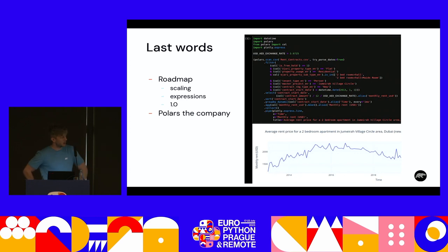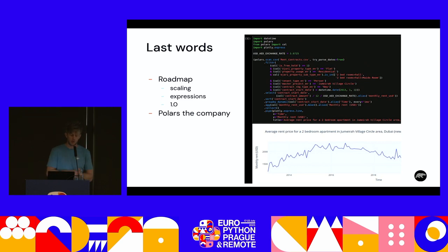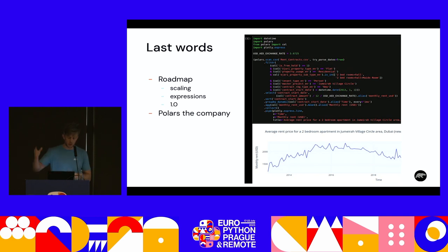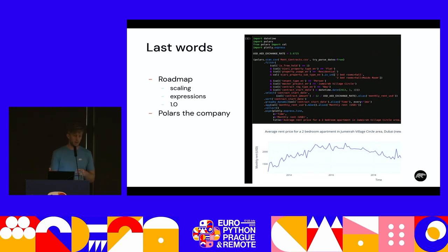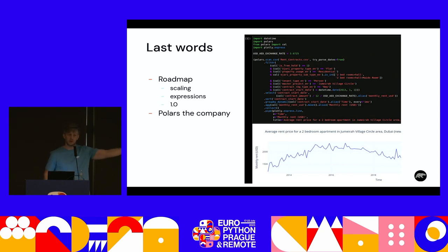Last words: Polars has started a company, and with this company we want to focus on scaling Polars — we already scale out of core, but we also want to scale to big data and datasets that don't fit into a single machine. We want to get more expressions in, and this year we want to hit 1.0. And as a final note, a tweet from DataPythonista showed how you can plot with Polars — we don't do plotting natively, but you can just pass a Polars series to any plotting library, just like NumPy.